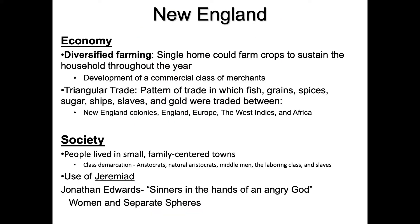The New England colonies have what is called diversified farming. Because of the climate — they have all the seasons — they can grow different types of crops: orchards, citrus, wheat, and more. A single household could farm the crops necessary to sustain the entire family for the whole year.